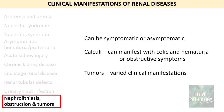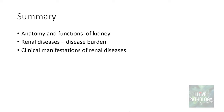So we have seen the various clinical manifestations of renal diseases, which range from a simple rise in blood urea nitrogen and creatinine to azotemia, uremia, nephritic syndrome, nephrotic syndrome, asymptomatic proteinuria or hematuria, acute kidney injury, chronic kidney disease, end-stage renal disease, renal tubular defects and their manifestations, and urinary tract infections. That completes today's topic on the clinical manifestations of renal diseases.